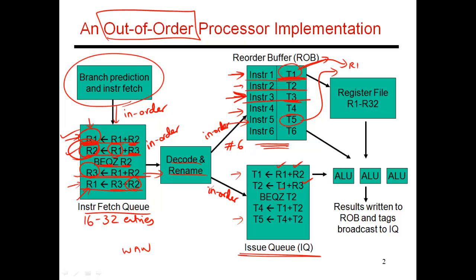T1 is not available because the instruction producing T1 is still sitting in the issue queue, so we definitely don't have a value for T1. Same thing goes for T2 and T4 — all of those register names are unavailable. The issue queue looks at all of these instructions and sees that the first instruction has R1 and R2 available, so it goes ahead and issues it. In this case it was the first instruction, so it's behaving no differently than what an in-order processor might have done. This first instruction gets selected and sent to the execution units.